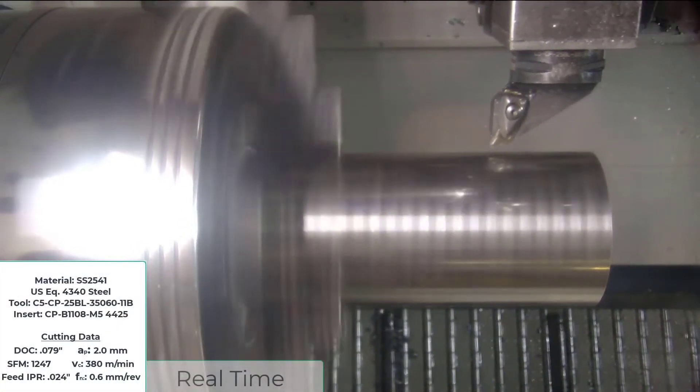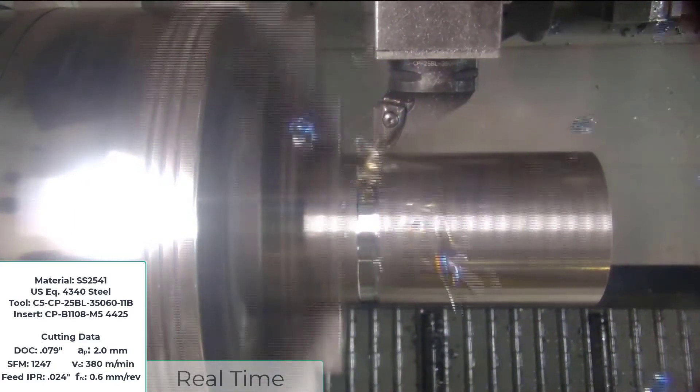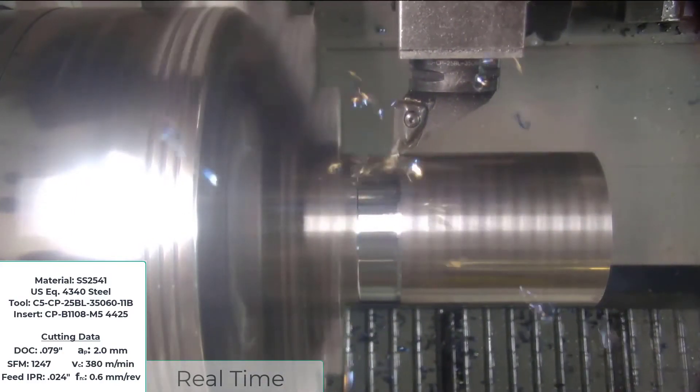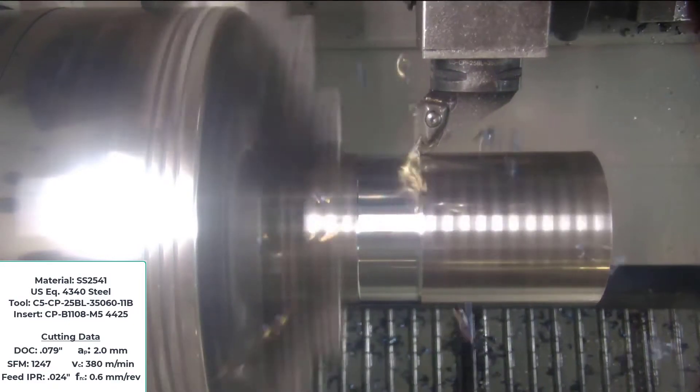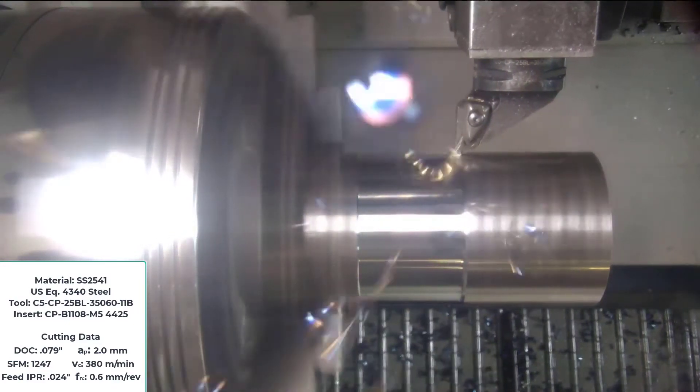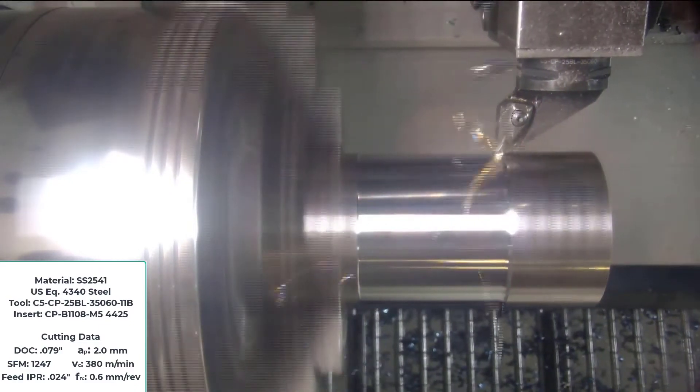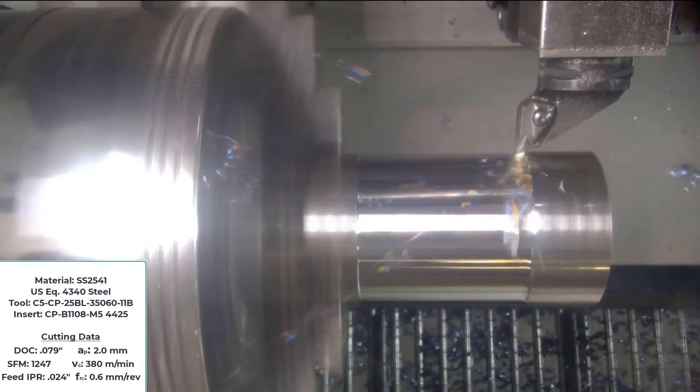This is a piece of 2541 Swiss steel being machined using the revolutionary new prime turning process developed by Sandvik Coromant and now available in CAMWorks. Our US equivalent is high-strength 4340 alloy steel. The depth of cut for each pass is 79 thousandths of an inch or 2 millimeters deep.